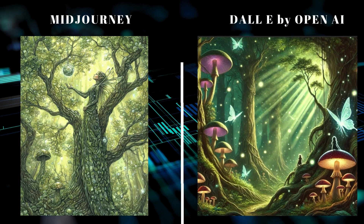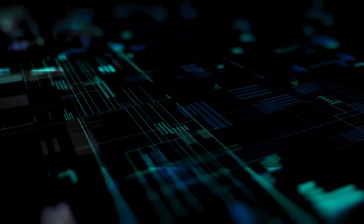Let's see what the DALL-E tool has to share with us. That's amazing — we've got the trees, we've got some fairies, and instead of fairies it came up with butterflies, which is fine. We've also got the color scheme. That's a draw in my opinion. Let's go for the next prompt, which is going to be the most difficult one.